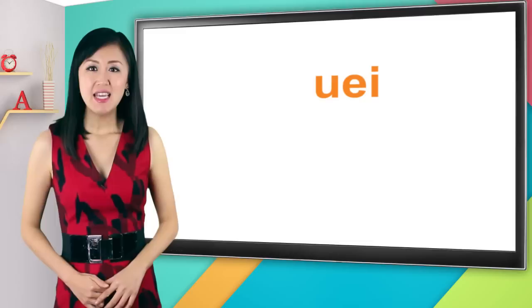First let's take a look at u-e-i, which is pronounced wei, wei. It's just wu plus a, wei, like wei to go, wei.